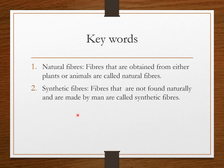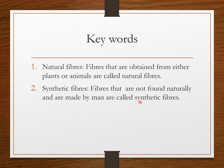Natural fibers: fibers that are obtained from either plants or animals are called natural fibers. Synthetic fibers: fibers that are not found naturally and are made by man are called synthetic fibers. Please write down these two definitions in your copies.